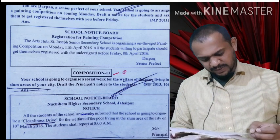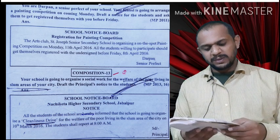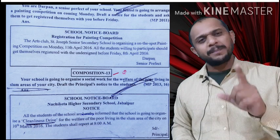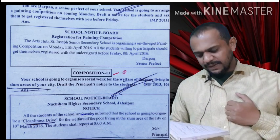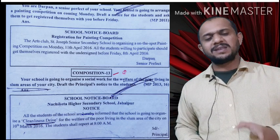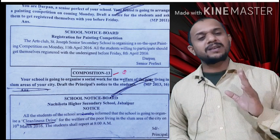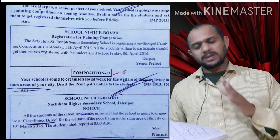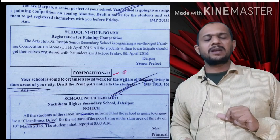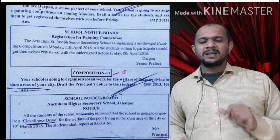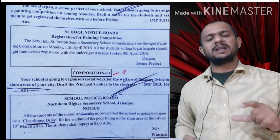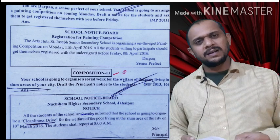Two more notices to check: Number one — Registration of Painting Competition. Prepare it the same way as the previous notices. Next — Cleanliness Drive. You have organized a camp in a slum area and want to clean the slum area. Write the name of the school on top, then NOTICE in capital letters, mention the date on the left-hand side, write the related heading, deal with what, when, and where, then undersign with designation.